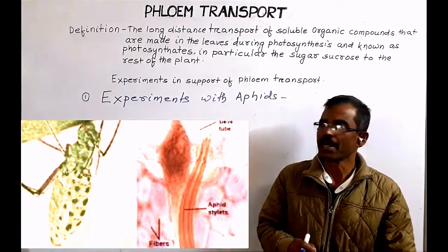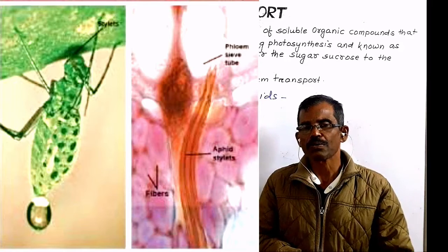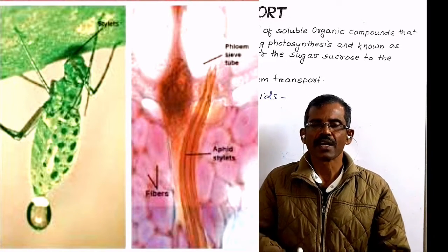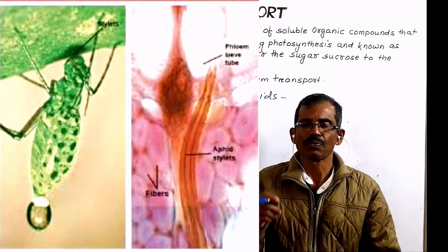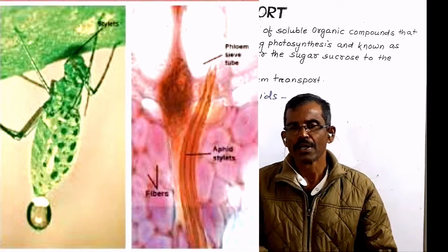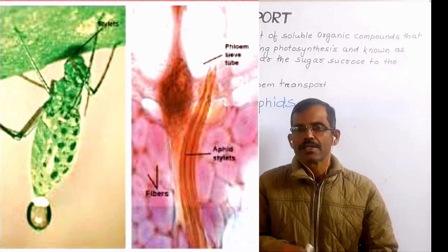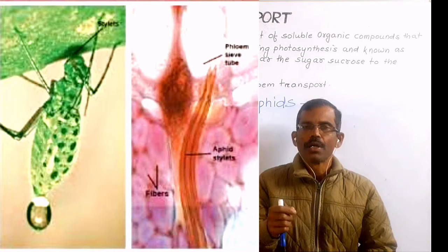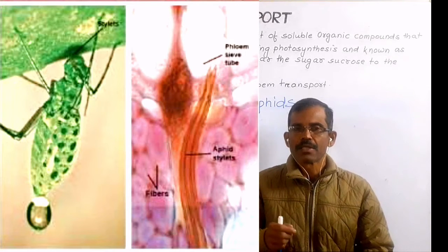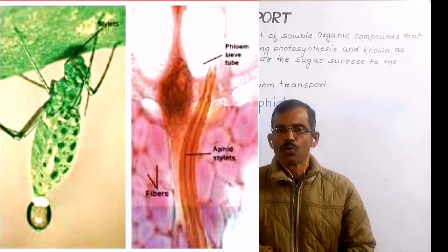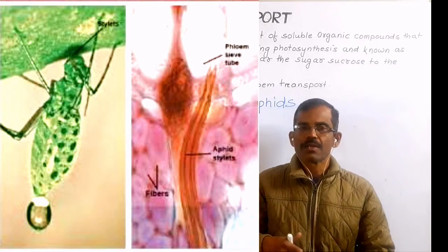Another experiment was conducted with aphids. Experiments with aphids help scientists to understand the nature of the translocated material. Aphids are small insects that can be xylem feeders or phloem feeders. Their mouth part consists of four stylettes which are pushed into the phloem during feeding. The stylet was cut while the insect was still feeding. As the sap in the phloem is under pressure, it oozed out of the stylet. This proved that the phloem sap is under pressure. The sap was then collected and analyzed, and it was found that it is rich in sugar. This experiment conclusively proved that sugar is translocated in the phloem.